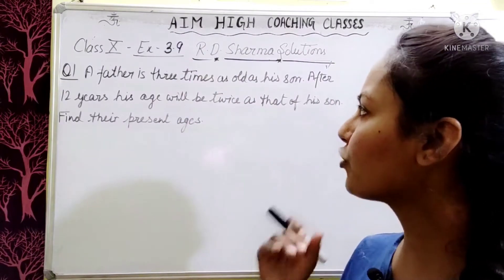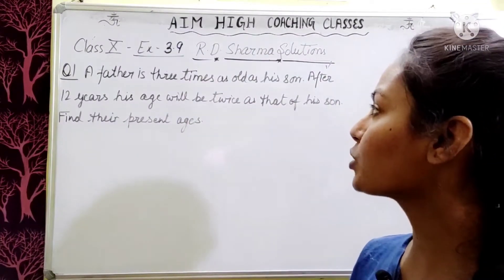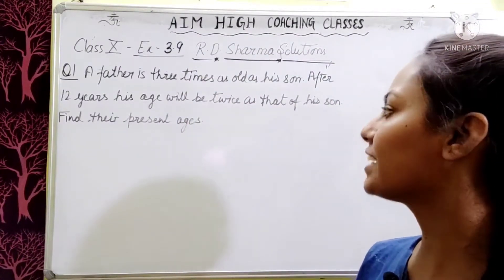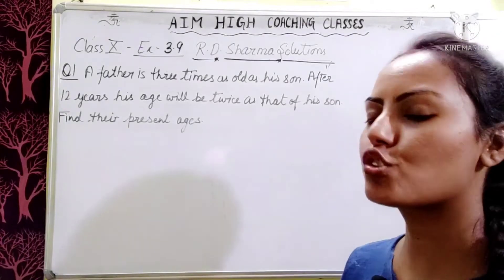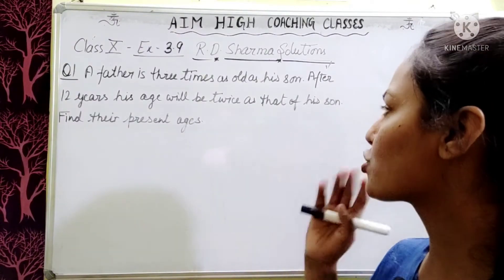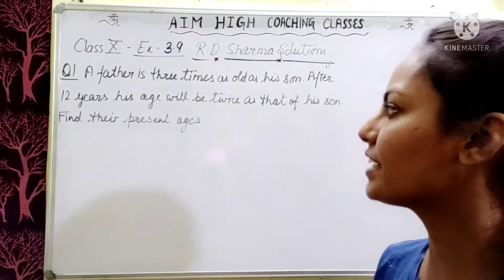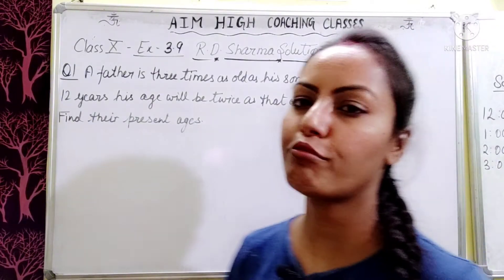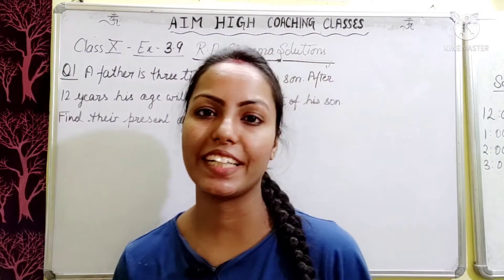A father is 3 times as old as his son. After 12 years, his age will be twice as that of his son. Find their present ages.